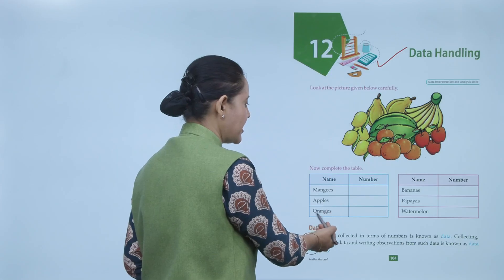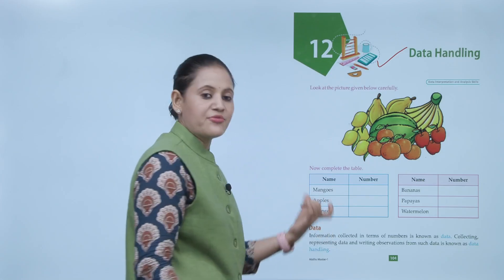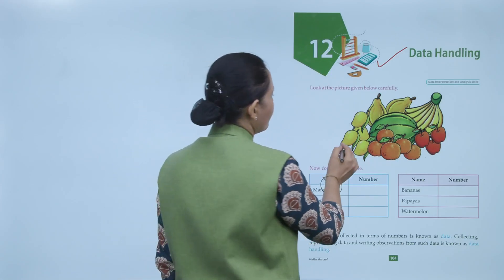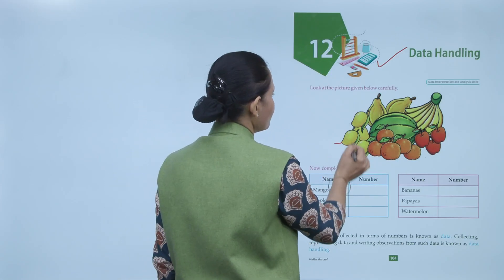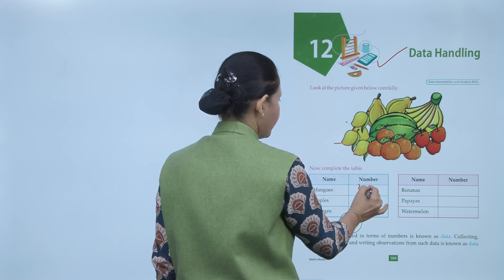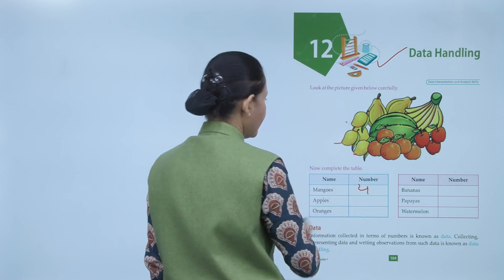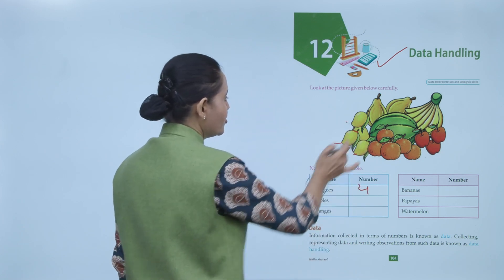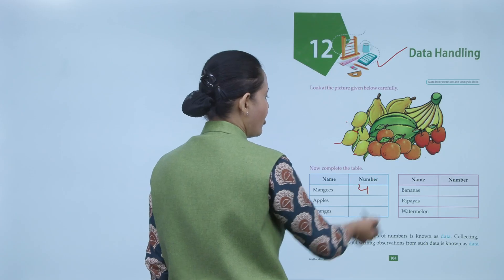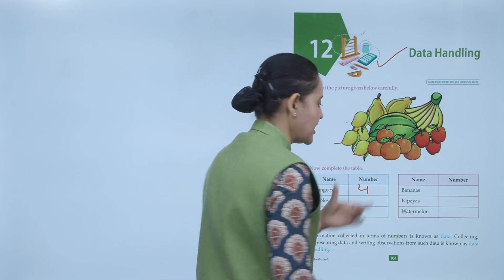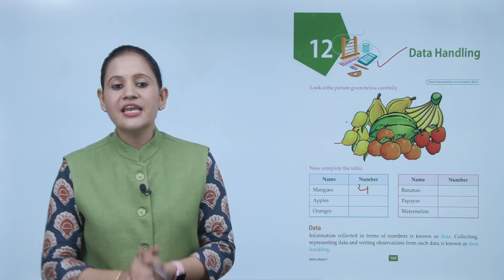The fruits are mangoes, apple, and oranges. You have to write their number. For example, number of mangoes: 1, 2, 3, 4. Like this, you will write the number of apples, oranges, bananas, papayas, and watermelons and fill in the table.